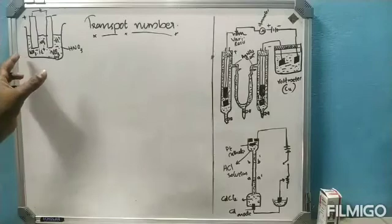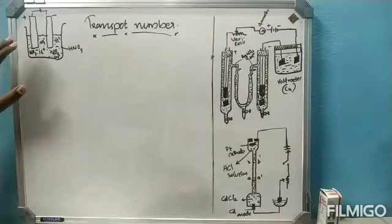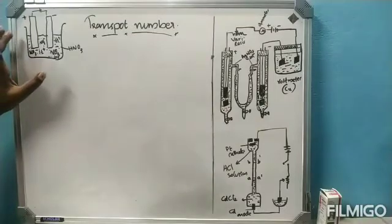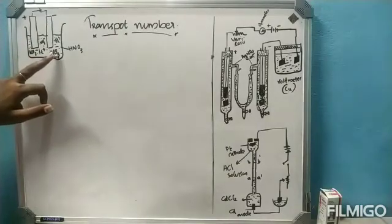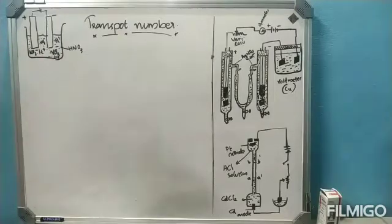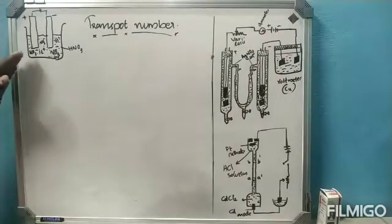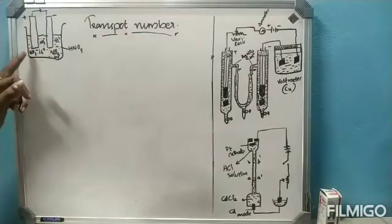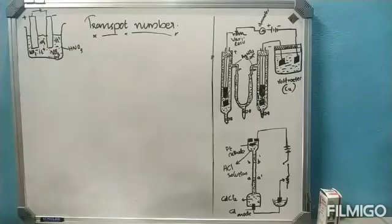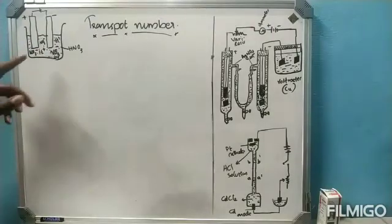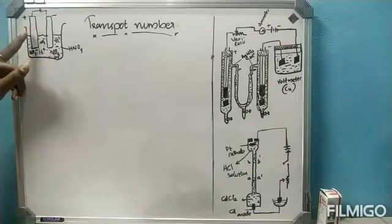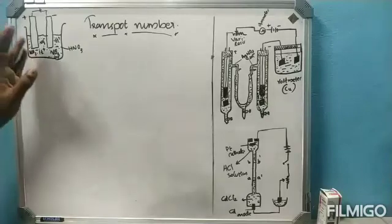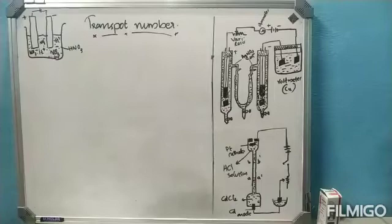When a current is passed through an electrolyte solution, the current transported through the electrolyte solution is due to the movement of ions present in that solution. These ions get deposited or discharged at opposite electrodes in equivalent amounts.